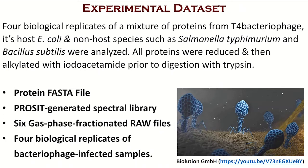The dataset used in this tutorial is a mixture of proteins from T4 Bacteriophage infecting its host E. coli, as well as non-host species such as Salmonella typhimurium and Bacillus subtilis. This dataset will be referred to as the IPRG dataset throughout the workshop, since a DDA dataset of these samples was used for the Proteomics Informatics Research Group, also called IPRG, metaproteomic study of 2020. This resulted in generation of a protein FASTA file, a process-generated spectral library, six gas phase fractionated raw files, and four biological replicates of Bacteriophage-infected samples.